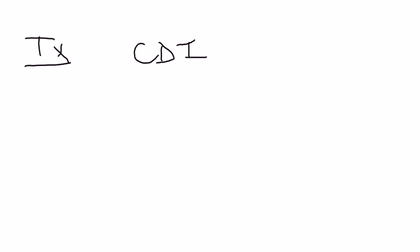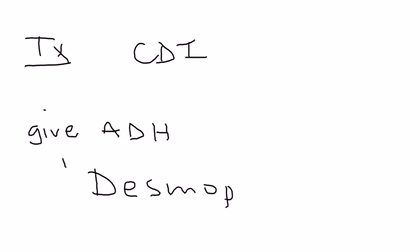How do you treat CDI? The treatment is actually very straightforward — you give them ADH. In particular, the drug is a synthetic analog of ADH called desmopressin, which is made in the laboratory and given to the patient. It can be given in various forms: intranasal solution, IV, oral, or subcutaneous. And that's the treatment.